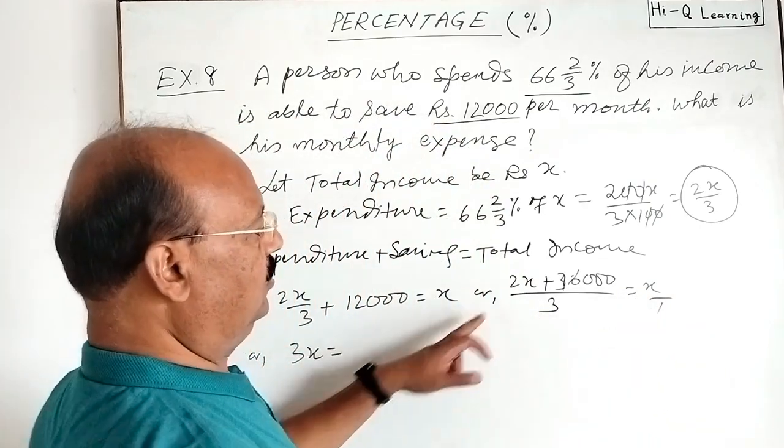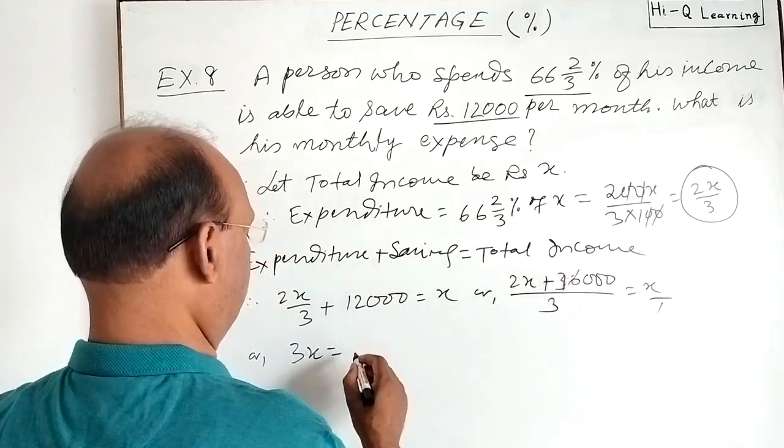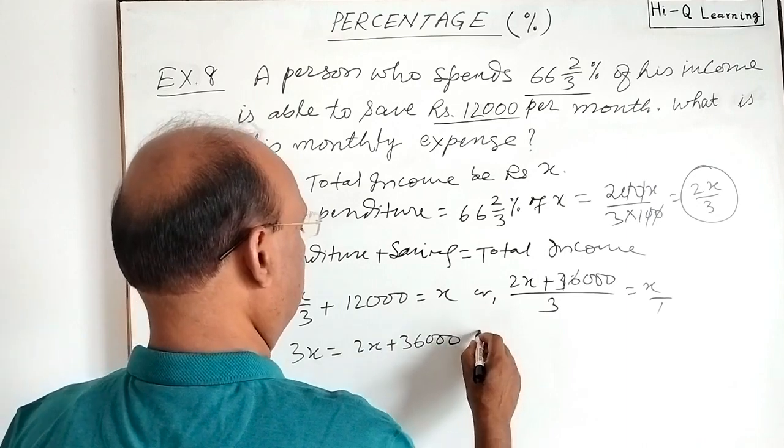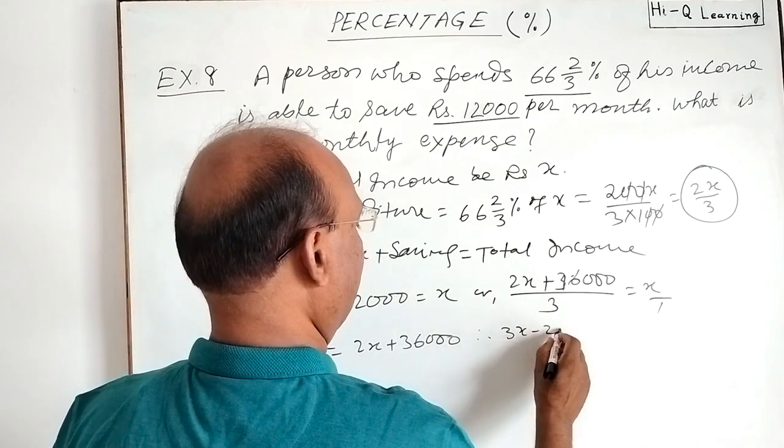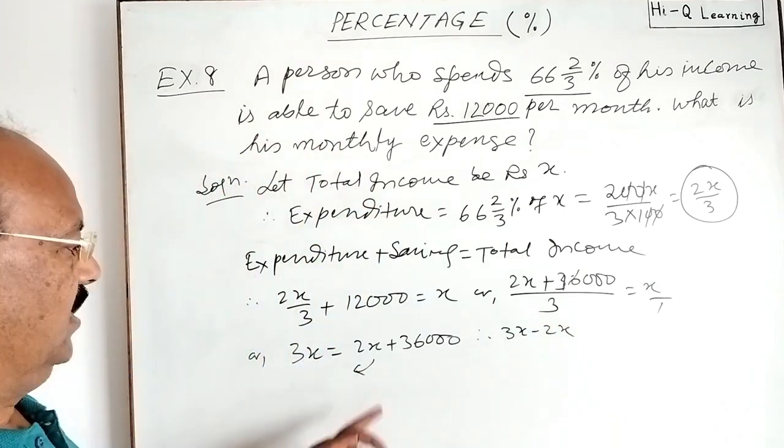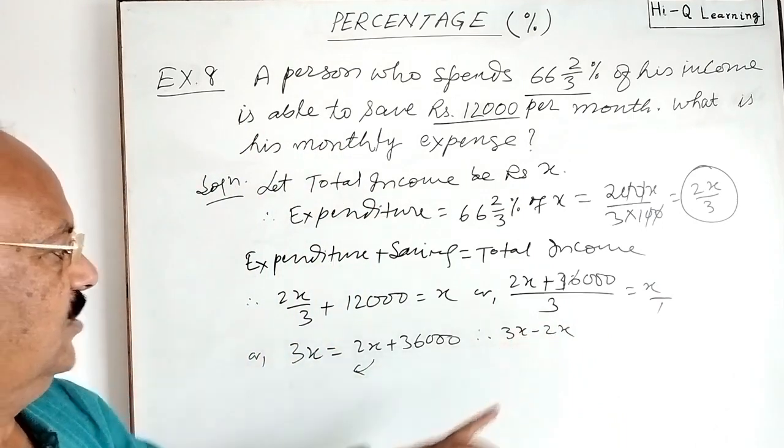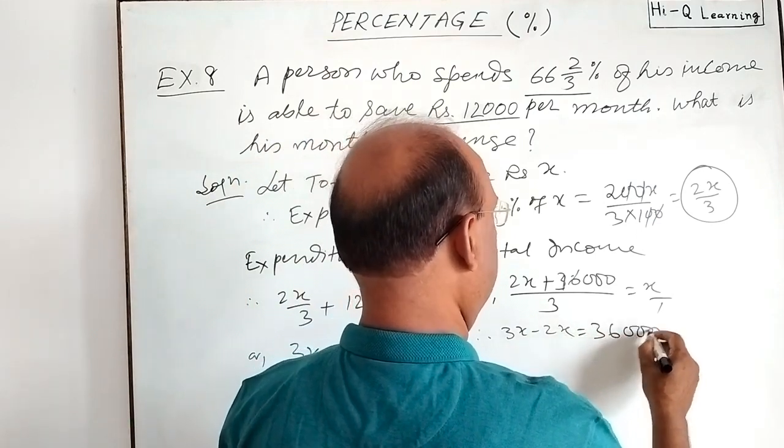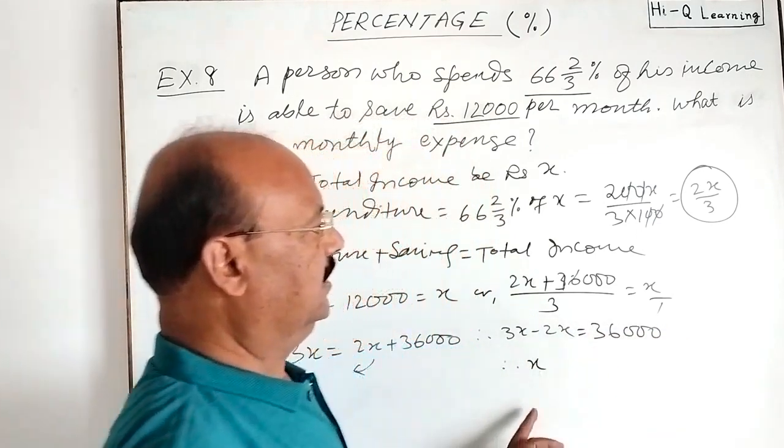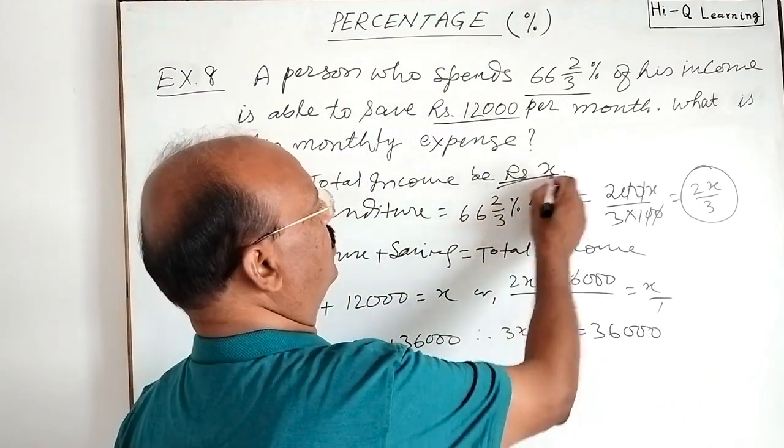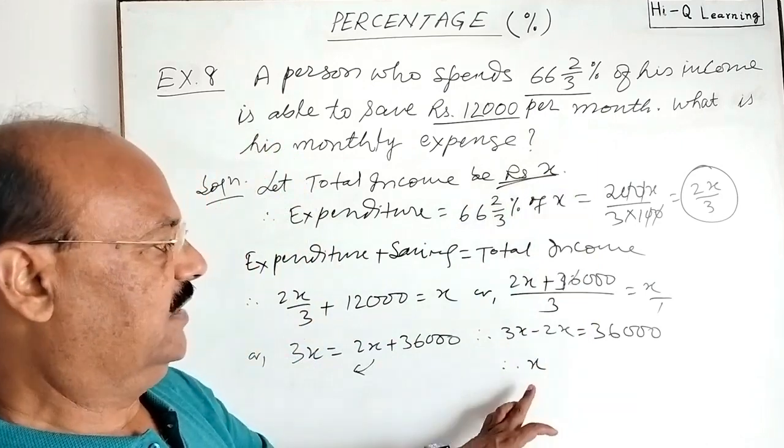By cross multiplication, this is nothing but X by 1, so by cross multiplication this is 3X. Therefore 3X is equal to 2X plus 36,000. We will be transposing this 2X to left hand side, it becomes minus, so 3X minus 2X is equal to 36,000.